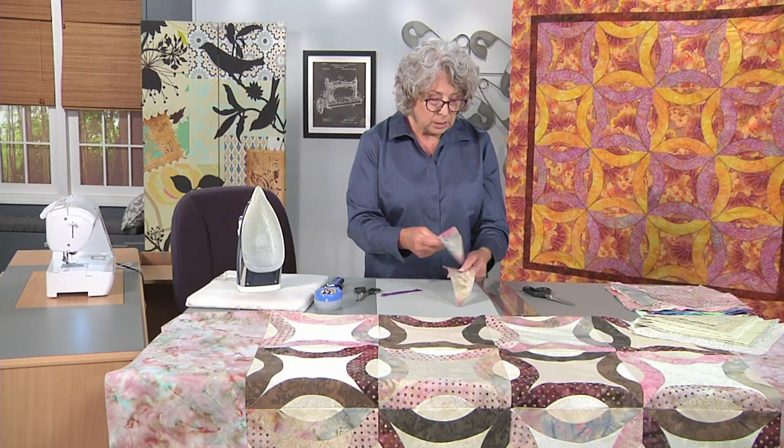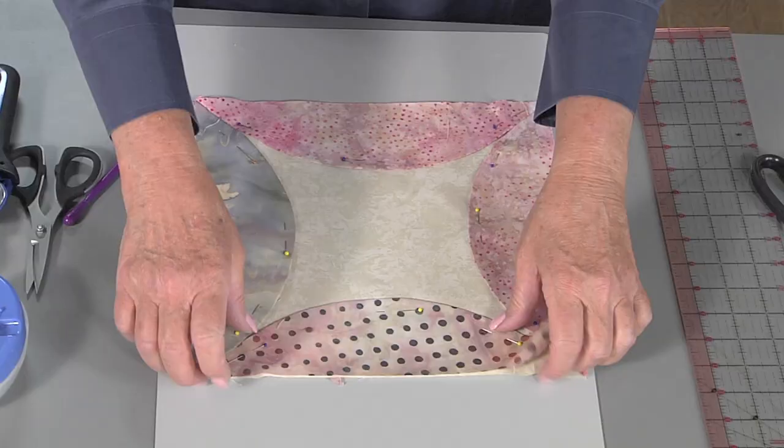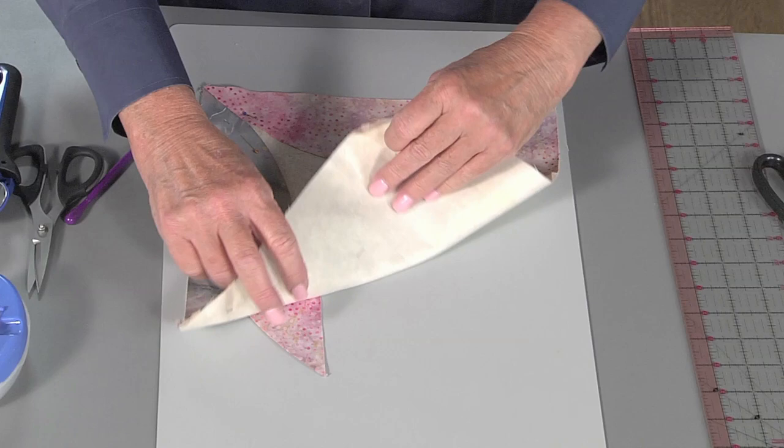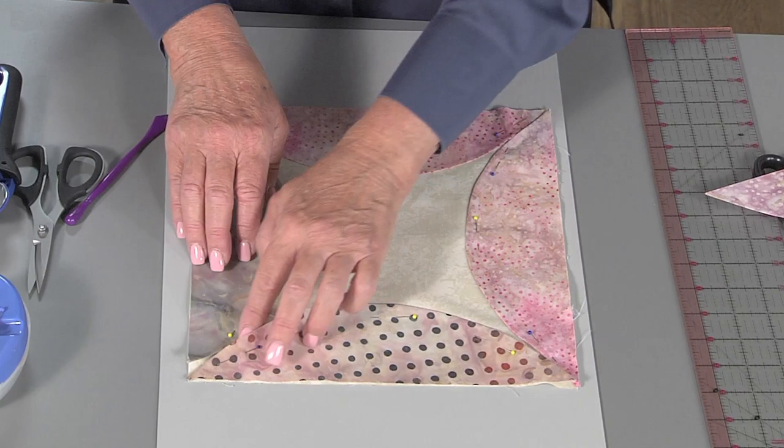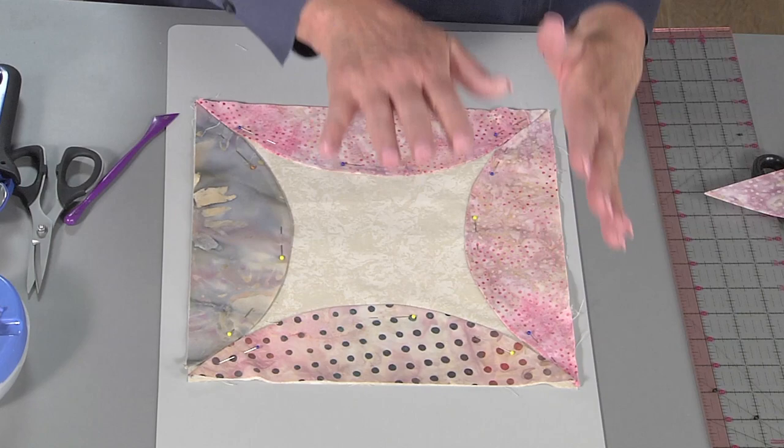Then we're going to take all of these little footballs. We're going to pin them onto the background fabric. Just like this. See how they match up at the corners? We're going to pin them on. And for each block, you want to do each block in one color, the alternating block in another color as you can see here, brown and pink. So let's go over to the machine again.